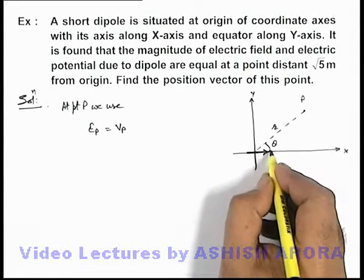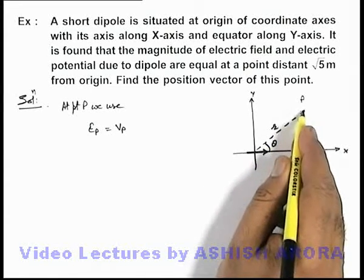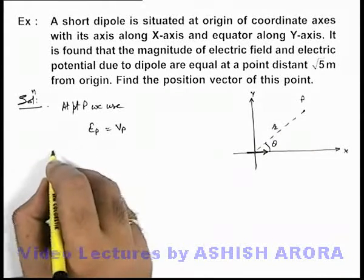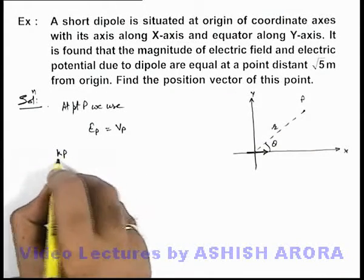At an angle θ from the axis of the dipole, at point P, the electric field magnitude is given as kP/r³ √(1 + 3cos²θ).